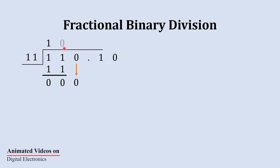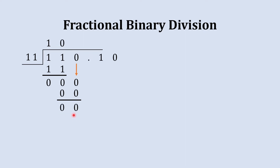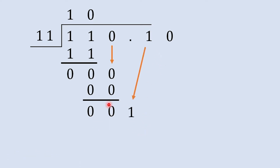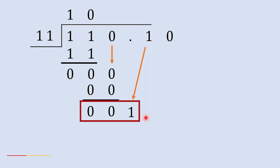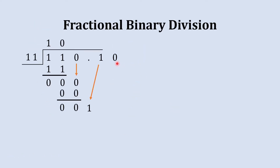One one ones are one one, and now we'll subtract this one one from this one one, so we get zero zero. Now we'll bring this zero down and check if this number is equal to or greater than the divisor. No, it is not equal — it is less than the number, so we cannot divide. We'll multiply this one one by zero and write zero zero, and after subtraction we get zero zero. Now as per the regular procedure of binary division we bring this one down.